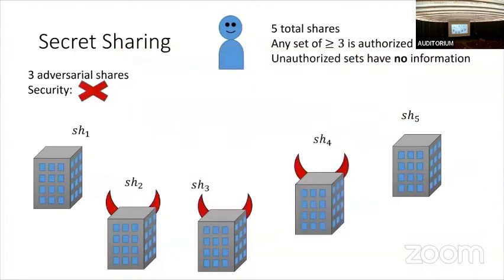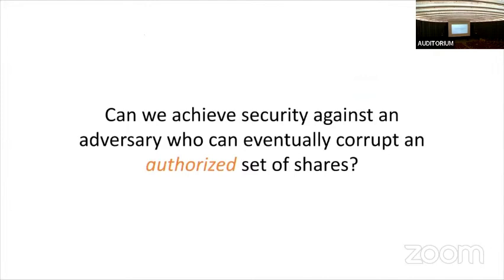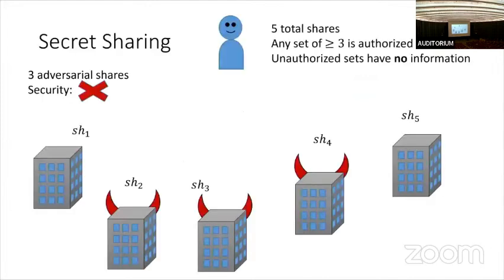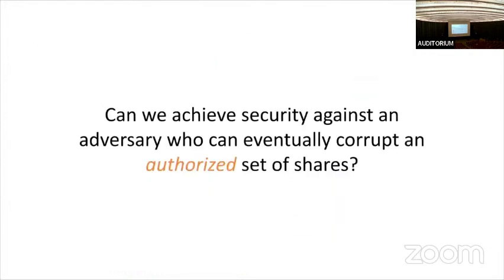As soon as one extra share is stolen, if any three shares can reconstruct, we lose security completely and the adversary is able to steal our data. So the question we set out to answer is: can we hope to achieve security against an adversary who can eventually corrupt an authorized set of shares — something that is able to natively reconstruct?